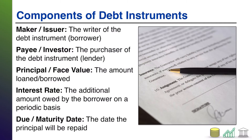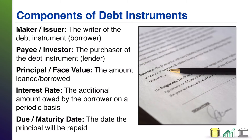Let's talk about the components of these various debt instruments. You'll see different names for different pieces of the components, but they all serve basically similar purposes. In the case of a note, you might see the word the maker of the note. In the case of a bond that's traded in the open market, it would be the issuer of the bond. But essentially, this is the writer of the debt instrument — or, as I have in parentheses here, the borrower. The person who is borrowing the money is the person who either makes the note or issues the bond.